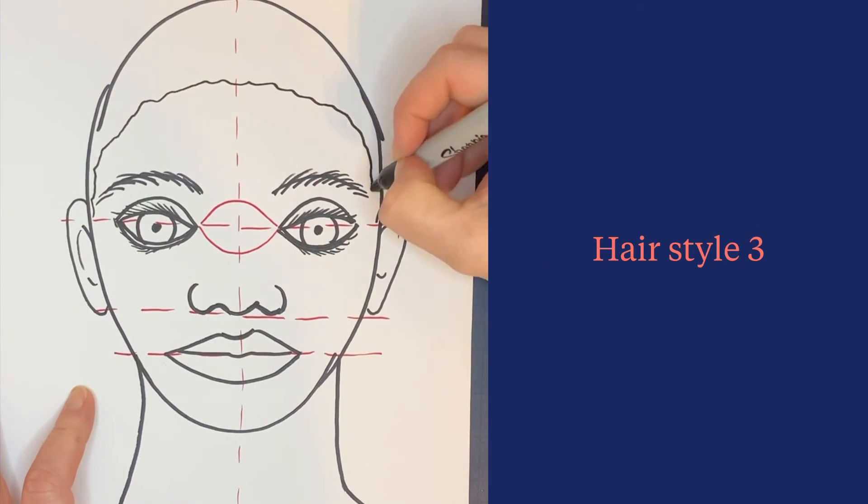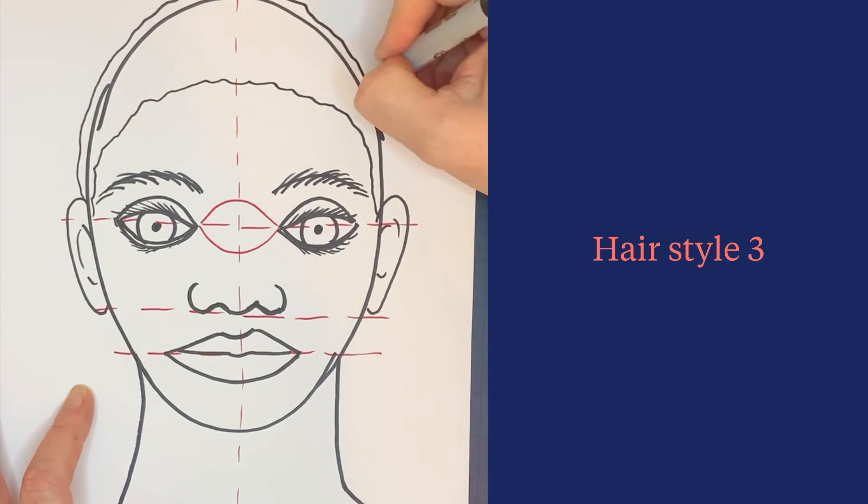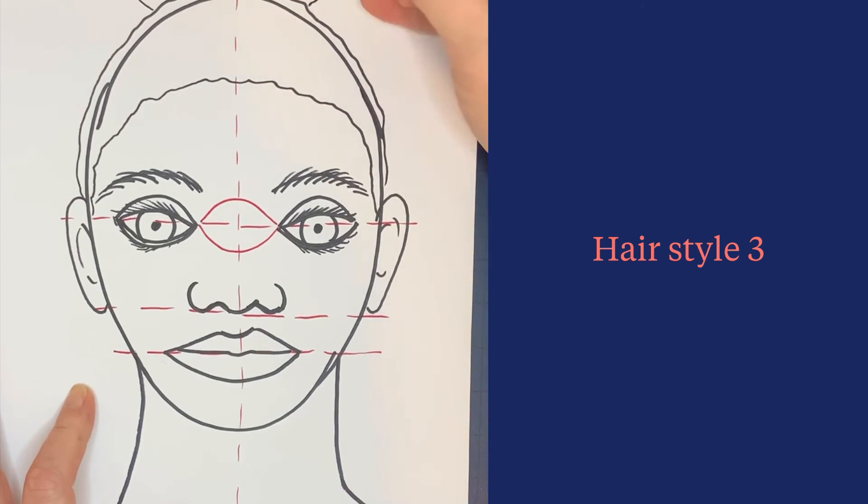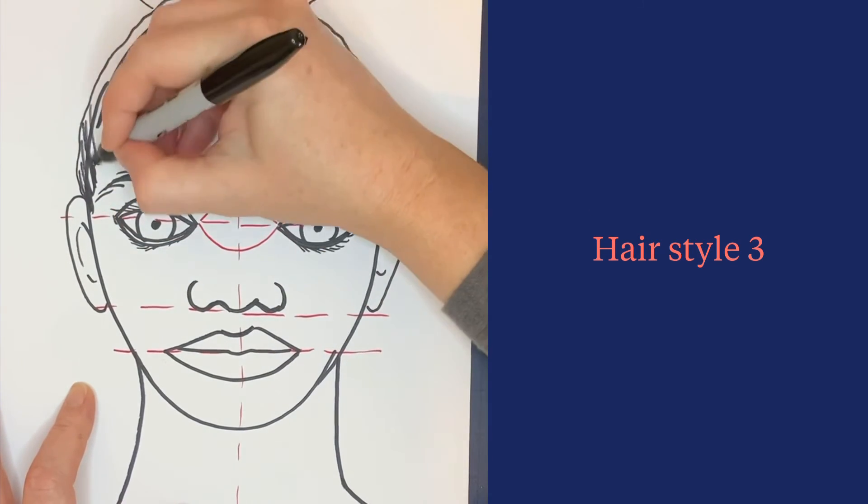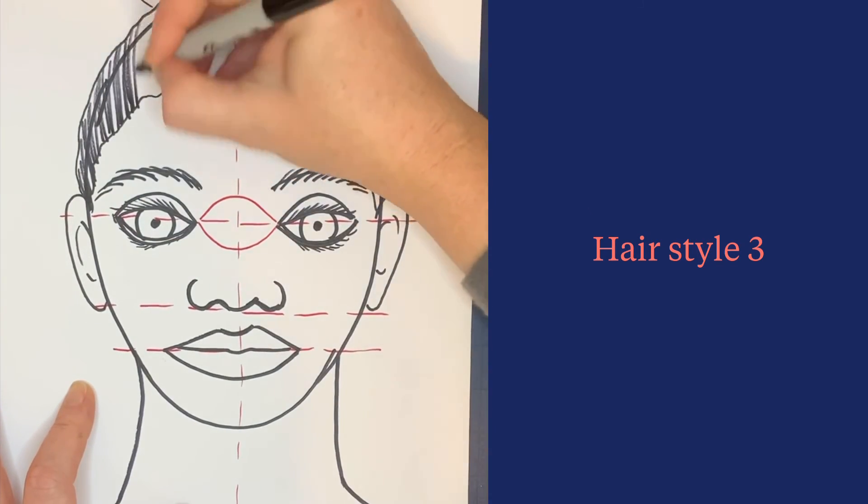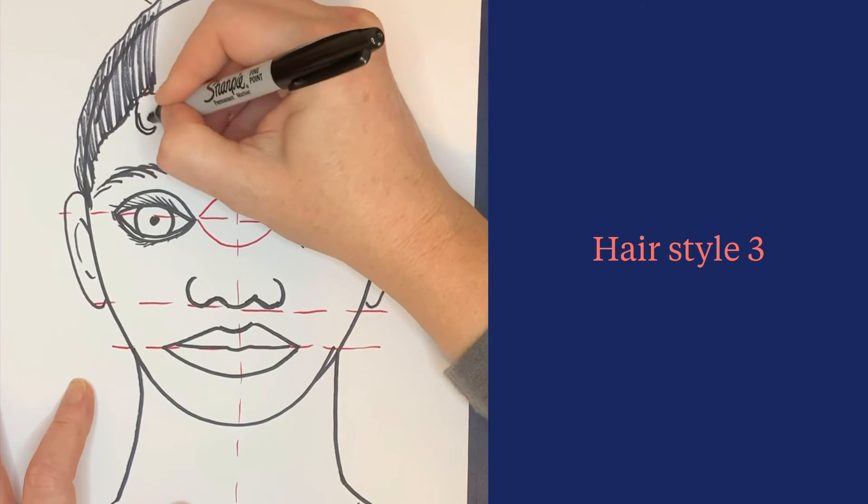Hairstyle number three is pulled back hair. Put the outline of the hair in, and if you have a ponytail or poof, draw the hair in the direction it is pulled back or brushed back.